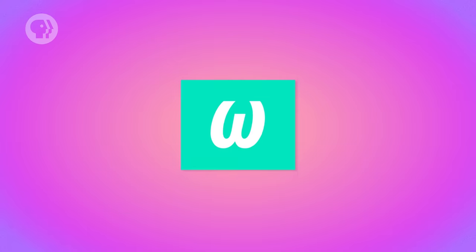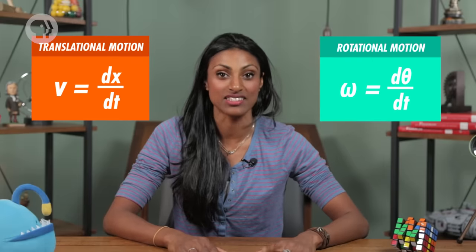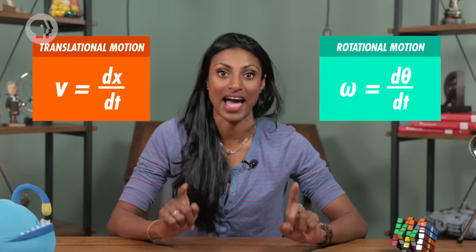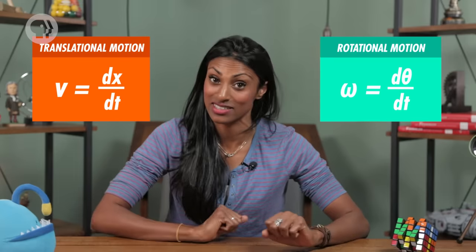This is known as angular velocity, and is represented by the lowercase Greek letter omega. Which I want to point out looks a bit like a w, but isn't a w. And as you might have guessed by now, angular velocity is the derivative, or the rate of change of angular displacement, with respect to time.